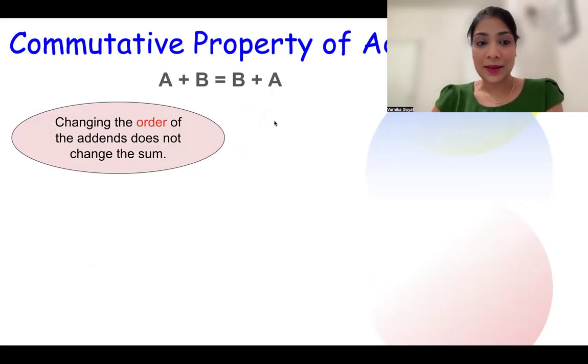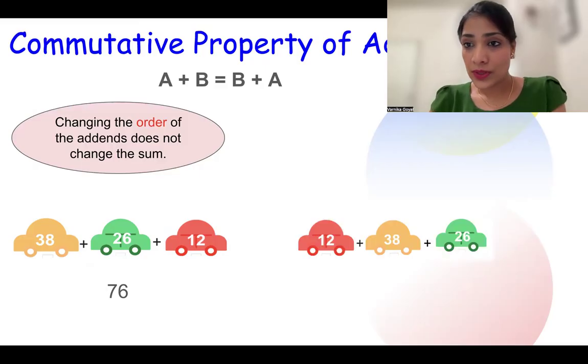Let's look at another example. We have 38 yellow cars, 26 green cars, and 12 red cars, and we want to find the total. Let's do that. The total sum comes to be 76. But what if I count 12 red cars first and then yellow and then green? Will the sum be different? Let's calculate again. 12, 38, 26 gives us 76. See, the sum is still the same.